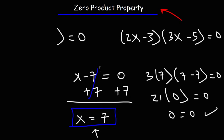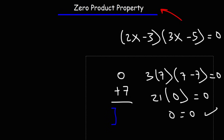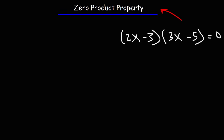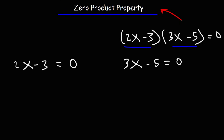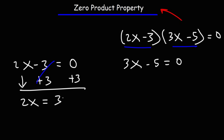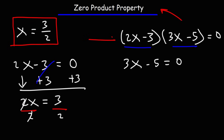Now for the second example, we follow the same process and set each factor equal to zero. We get two equations: 2x minus 3 equals zero, and 3x minus 5 equals zero. For the first, we add 3 to both sides to get 2x equals 3, then divide both sides by 2. The first answer is X equals 3 over 2. If we plug this into the original equation, that factor equals zero, which makes the whole equation equal zero.